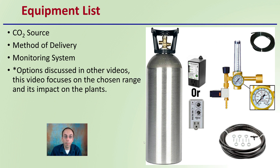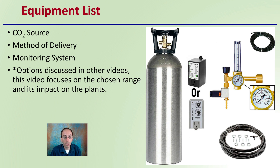The equipment list includes a carbon dioxide source, a method of delivery, and a monitoring system. There are other videos on this channel that focus on those aspects, but this video focuses on the chosen range and its impact on the plants. The image provided here shows, if you were to use a bottle system, some pieces of equipment you might want to be considering.